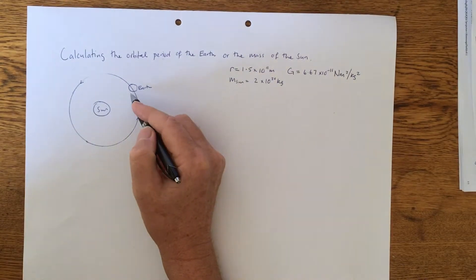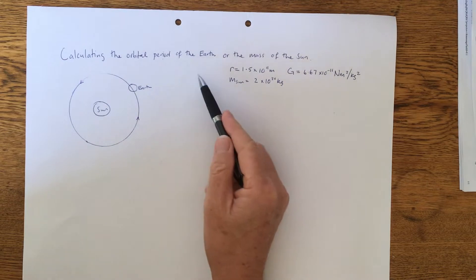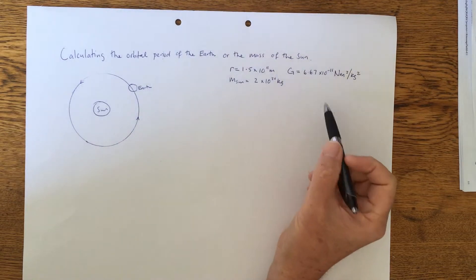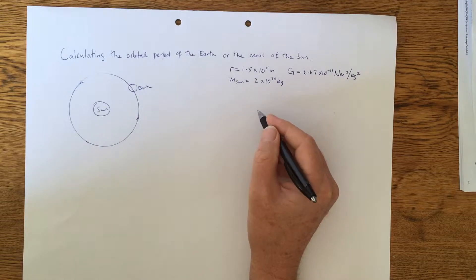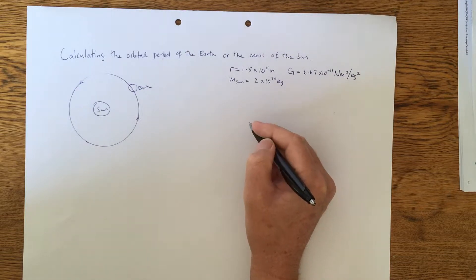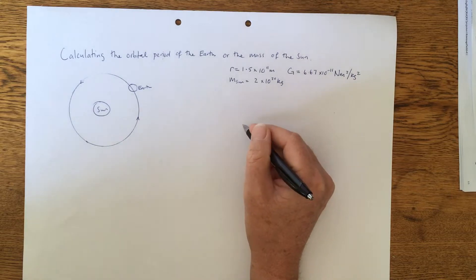Hi there. This question is about calculating the orbital period of the Earth or the mass of the Sun. This particular type of question does come up quite often in exams, so I thought I might just go through that.